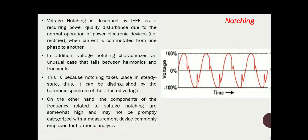Hello everyone, welcome to the power quality lecture series. In this video we are going to discuss one of the reasons of voltage or waveform distortion, that is notching. Voltage notching is described by IEEE as a recurring power quality disturbance due to the normal operation of power electronic devices, like a rectifier. When current is commutated from one phase to another, there will be voltage notching.